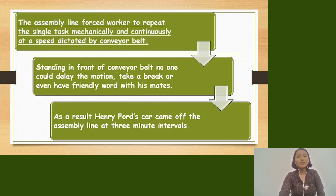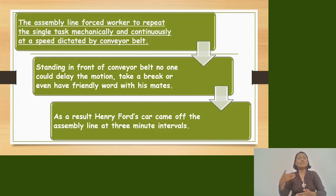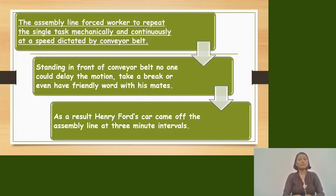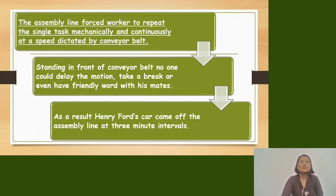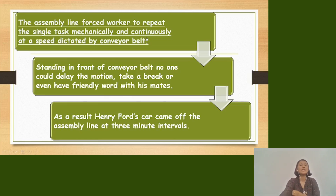So Henry Ford applied the assembly line method in his industry. The assembly line forces workers to repeat a single task mechanically and continuously at a speed dictated by the conveyor belt.